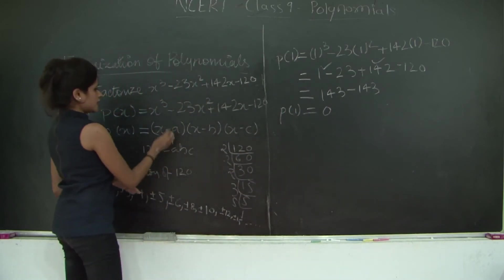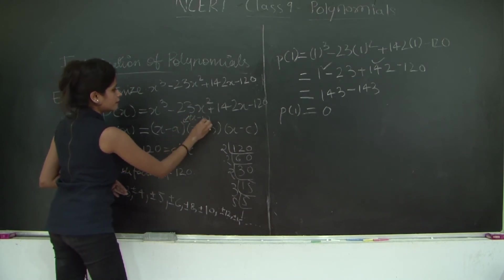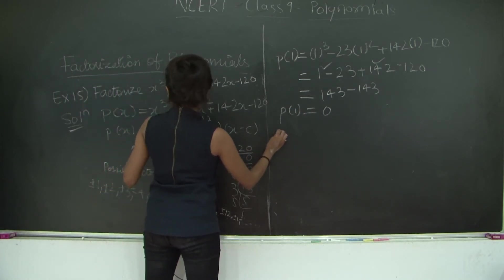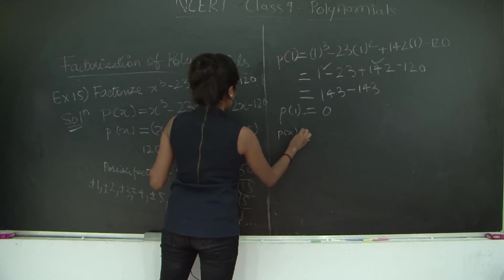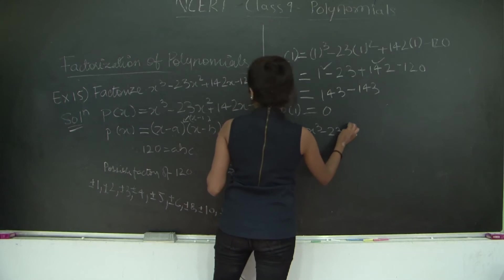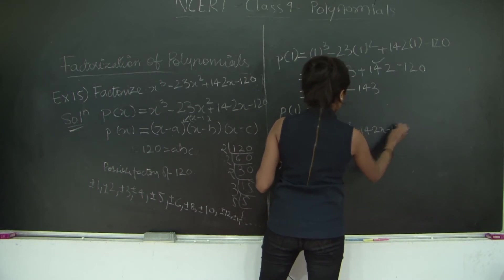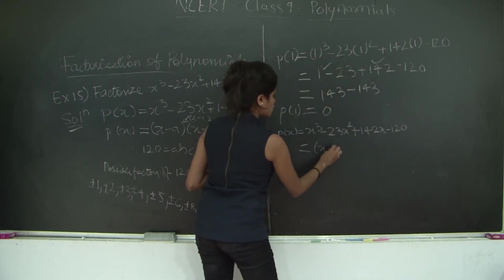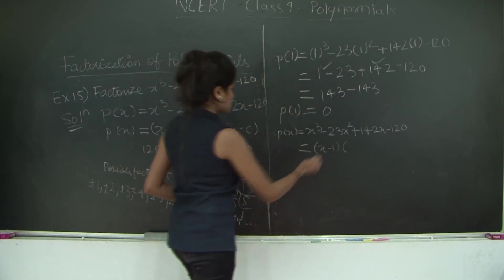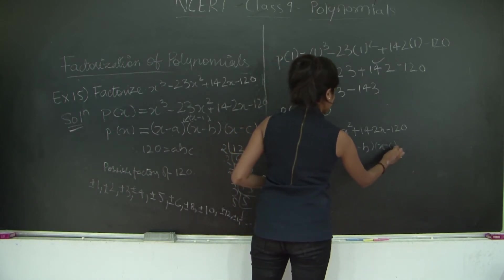Therefore, we got one of our terms, x - a. So x - a can be written as x - 1. Let's rewrite the polynomial. p(x) = x³ - 23x² + 142x - 120 is nothing but (x - 1)(x - b)(x - c).